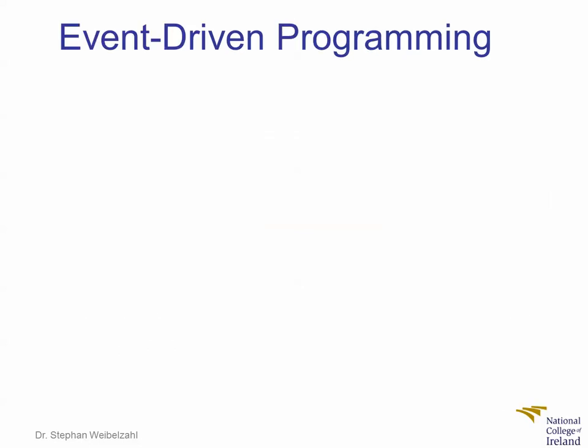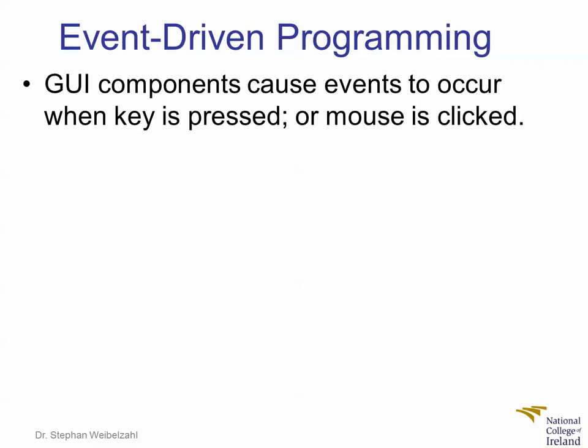This is called event-driven programming. Swing is actually relying on this idea that things are driven by events. Whenever something happens in the graphical user interface — for example, when a button is clicked, but also when a menu changes, when the size of a frame changes, when you click, when you press a key — all this triggers events.